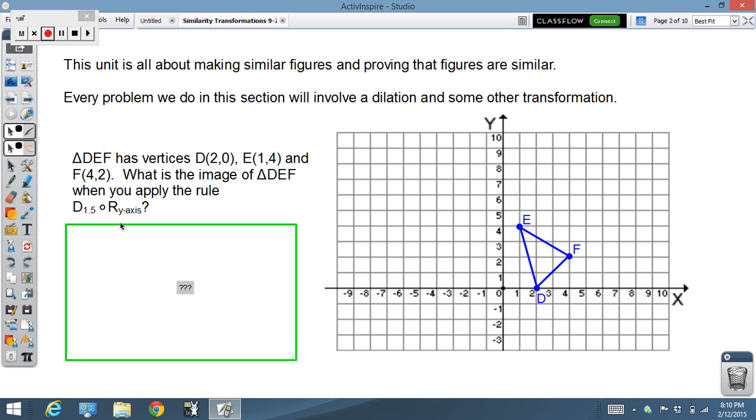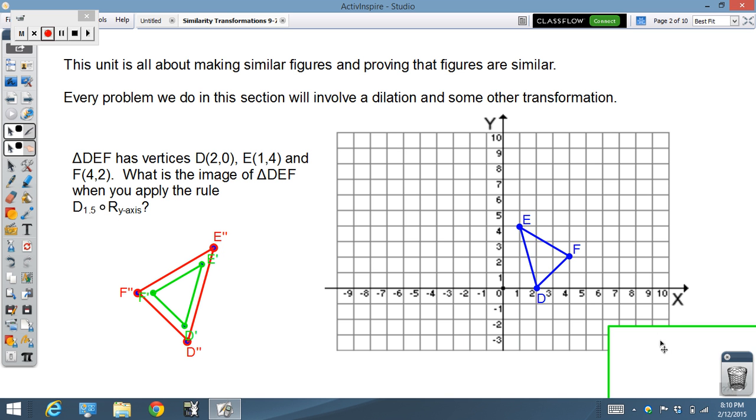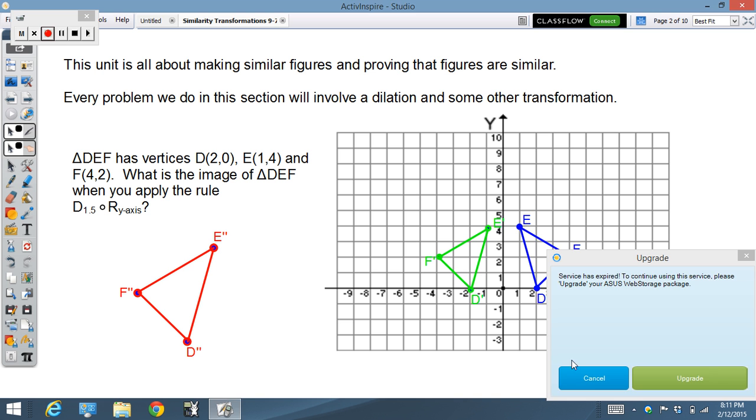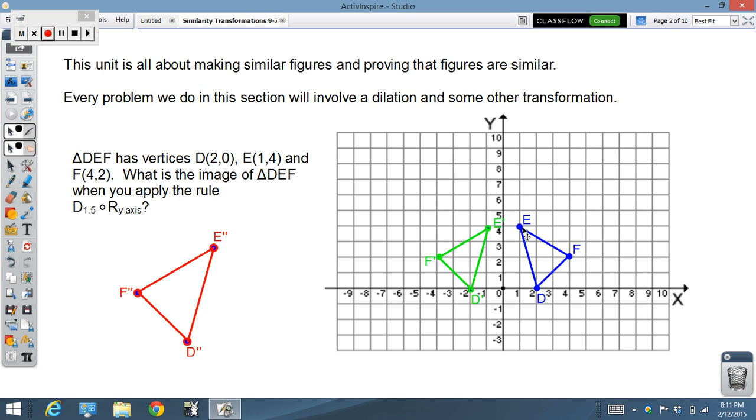Pause if you want to think about it, but here we go with the answer. I've cheated. I've already created the images that I need here. So after a reflection across the y-axis, you are going to see this sort of figure. Here's D prime, E prime, F prime after the reflection. Of course, hopefully by now you see how that works. Every point across the y-axis reflected equally as far. So there's the reflection.